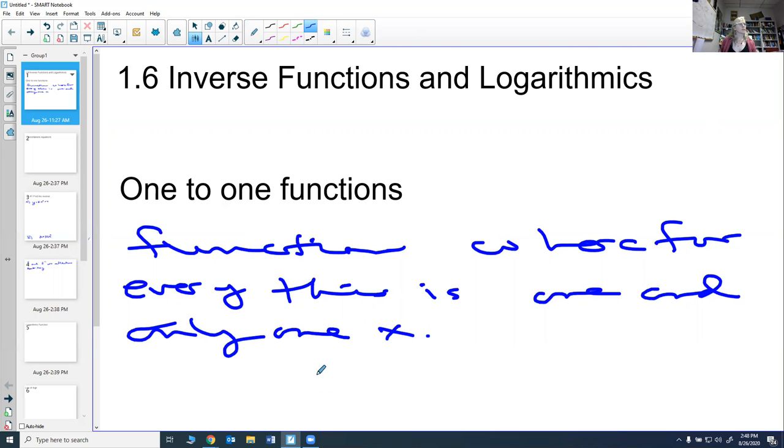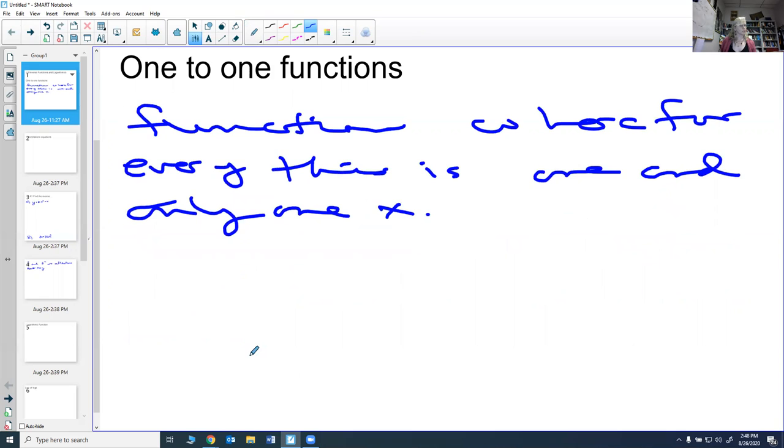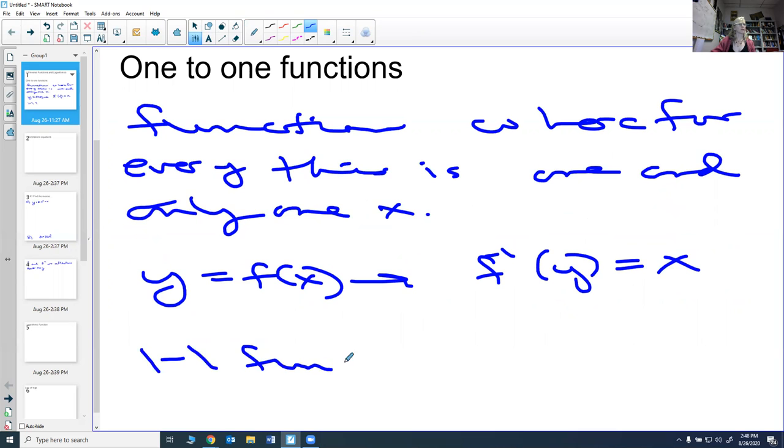The most important thing about one-to-one functions is that one-to-one functions have inverses. So if y equals f of x, then that's basically saying that if we took y and we ran it to the inverse, we get back x. And so one-to-one functions have inverses.